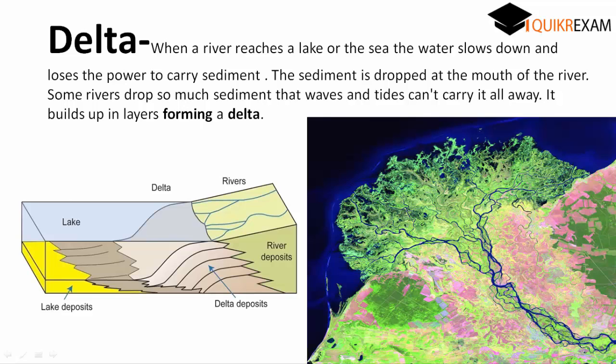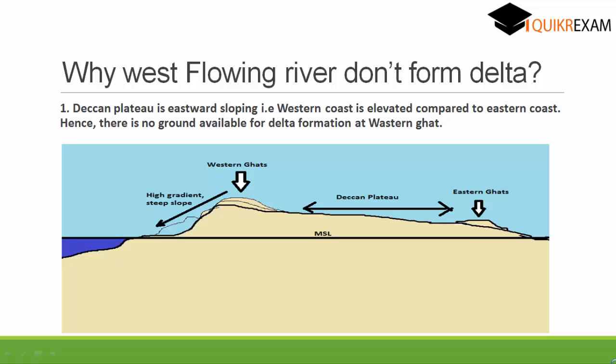Now let's discuss why west-flowing rivers don't form Delta. In this picture, the Deccan Plateau is eastward sloping. That means the Western Ghats are at a higher elevation than the Eastern Ghats, so it forms a higher gradient. This means the rivers flowing westward get no ground to form a Delta.